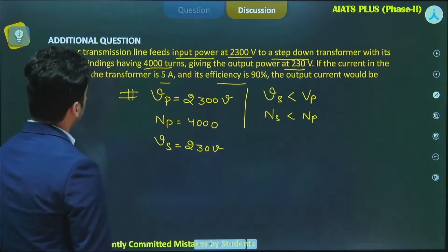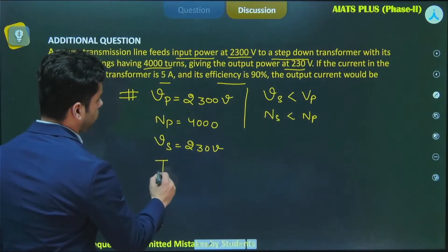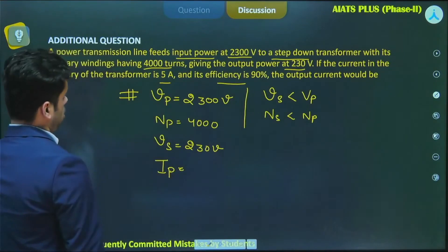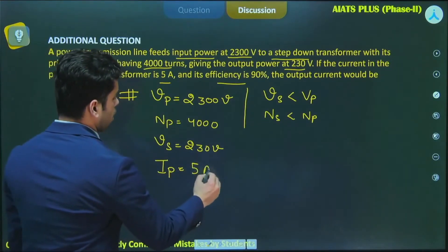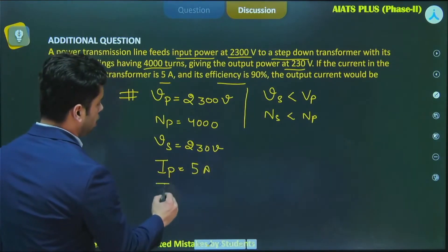The current in the primary of transformer, Ip, is 5 ampere. What do we need to find? We need to find the output current, the secondary current Is is what we are required to find.